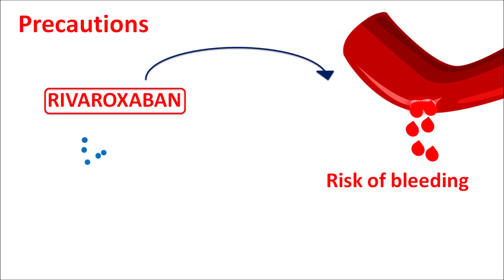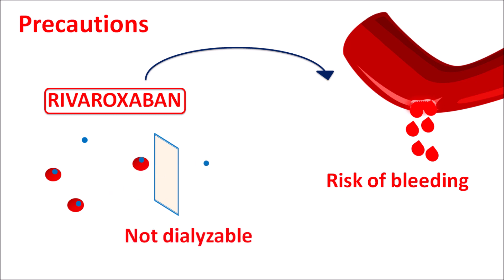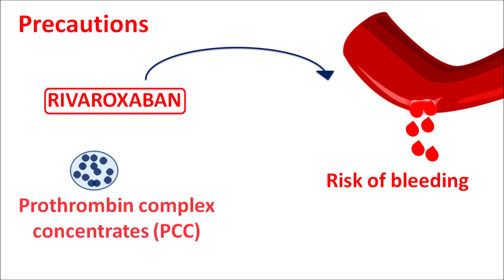Rivaroxaban is highly protein-bound, so when it is bound to protein it is not easily excreted, and it does not easily undergo dialysis. Normal drug molecules can undergo dialysis, but protein-bound molecules are not dialyzable. Therefore we cannot easily reverse the risk of bleeding produced by rivaroxaban at toxic levels, and there is no specific antidote available for this drug. However, prothrombin complex concentrates can somewhat reduce the risk of bleeding produced by rivaroxaban.